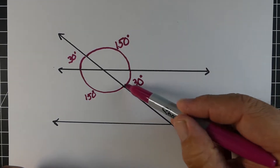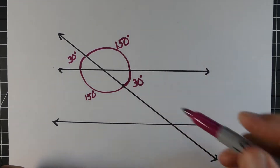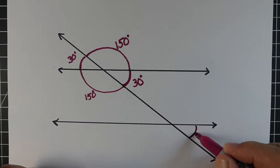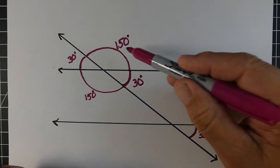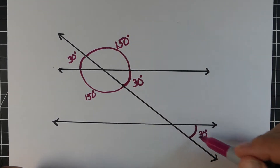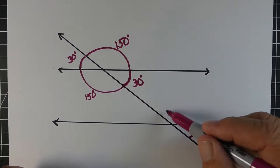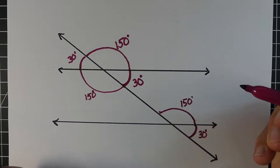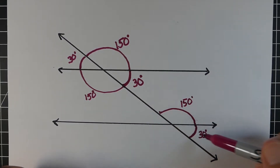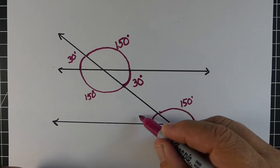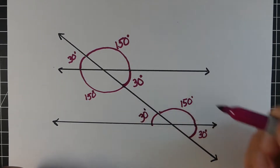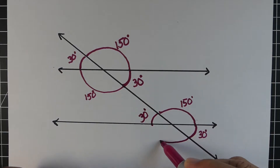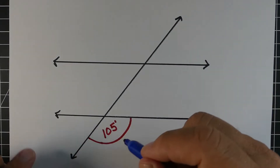You can take any of these angles and just slide it right down the transversal. So the angle up here, 30 degrees, we could just slide it right down here and it's the exact same angle. We could do the same with the 150 — just slide it down. Or you could say it would be adjacent to the 30 degree angle. The 30 degrees are vertical from each other, and the other missing angle is 150, and those two are vertical as well.